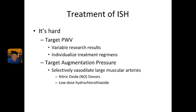The second approach is to target augmentation pressure. The major problem with targeting augmentation pressure is that you need to selectively vasodilate large muscular arteries. The best way to do this is to treat with nitric oxide donors, such as nitroglycerin. However, the problem with nitroglycerin is that patients are going to build up tolerance. But if you can have a patient on for a certain number of hours and then off for a certain number of hours, that might be a very good way to do it. Another option is very low-dose hydrochlorothiazide, which has a unique property among the thiazide diuretics in that it causes a very slight vasodilation.